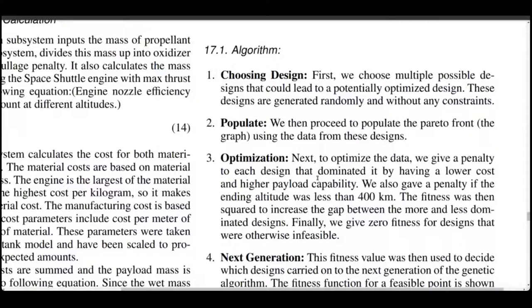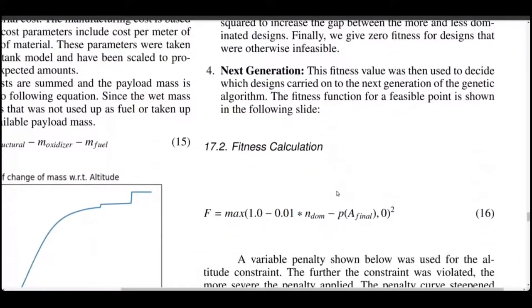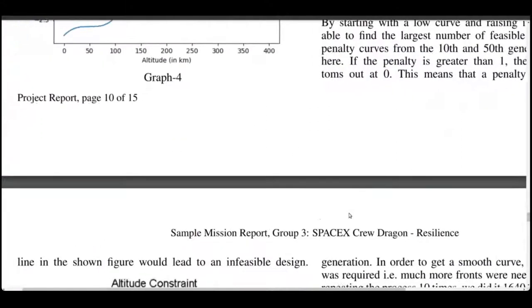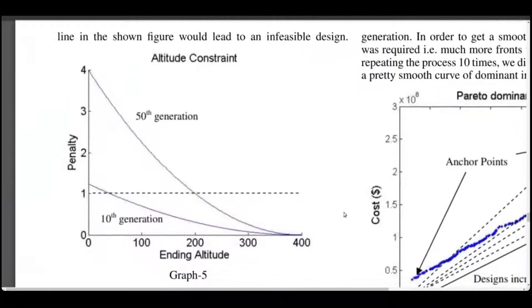That is, the models that can comfortably reach our target altitude. This is done by introducing a fitness function that gives out penalties based on the final altitude that the model can achieve. Obviously, higher the altitude, lesser the penalty and consequently, the more chance for the model to be selected.